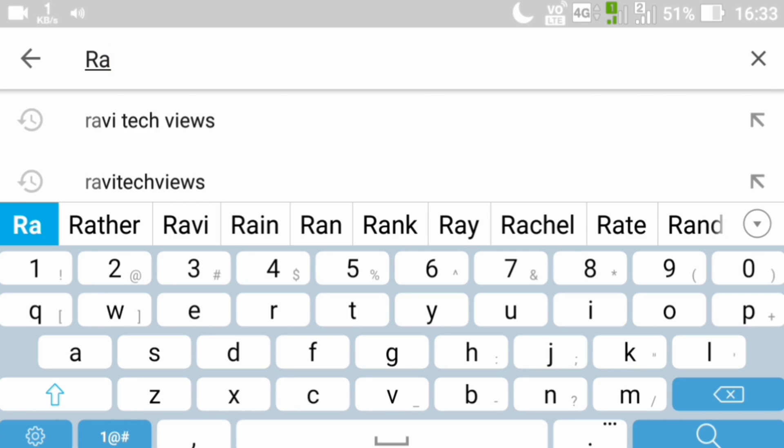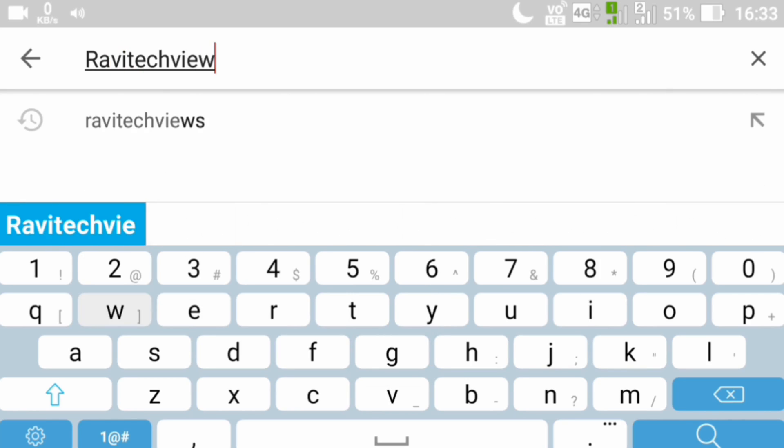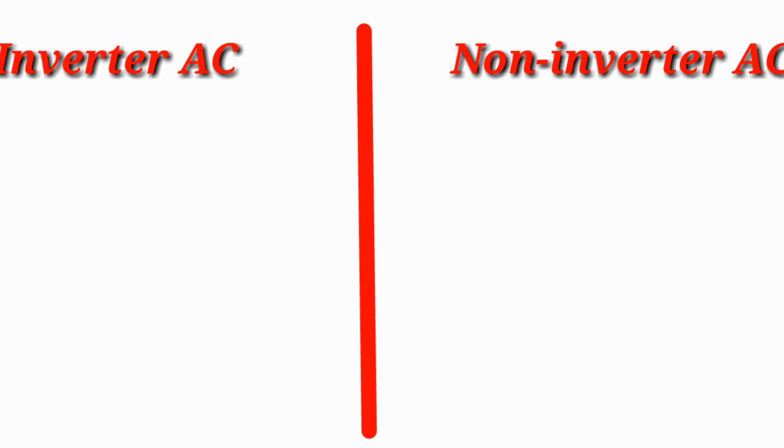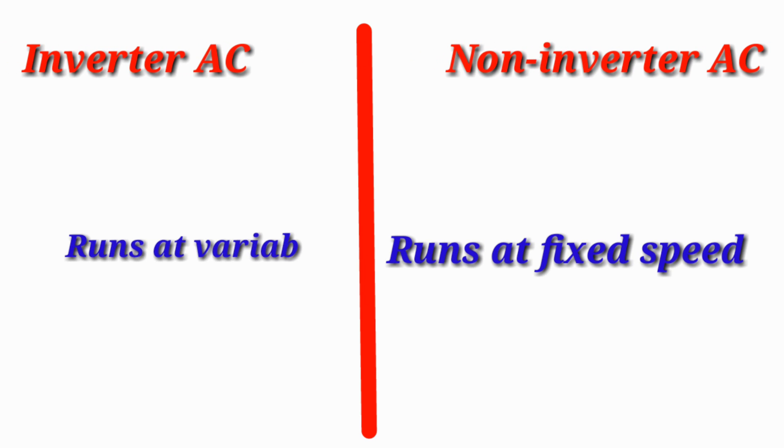Hello everyone, welcome back to Ravi Tech Views channel. This is first time here, subscribe my channel for getting latest information. The compressor runs at variable speed in inverter AC and the compressor runs at fixed speed in non-inverter AC.